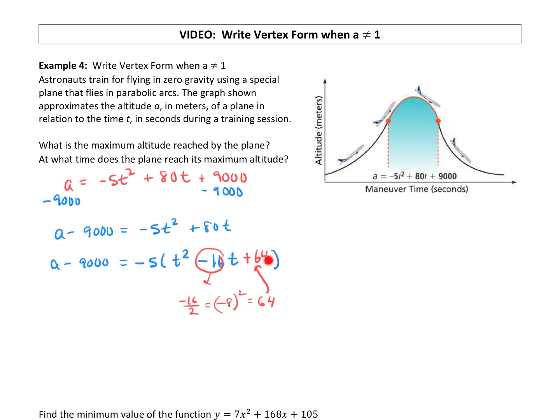Now here's the second difference. We put a 64 in here, right? But because of the negative 5 out front, this negative 5 is representing multiplication with this trinomial. So negative 5 times t squared, negative 5 times negative 16t, and negative 5 times 64. So even though we wrote in a 64, we actually put in a value of negative 5 times 64.